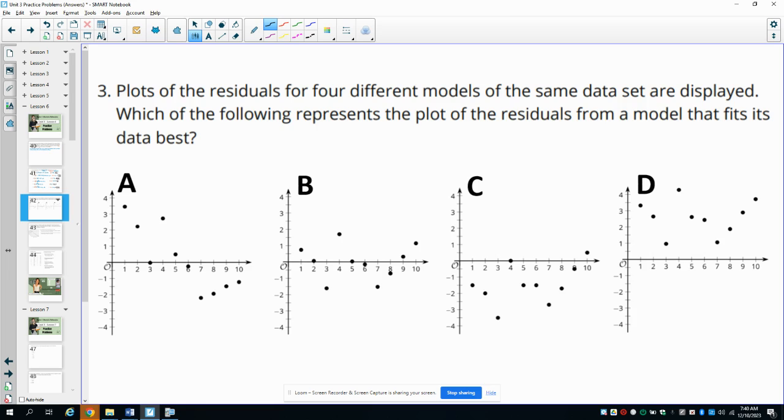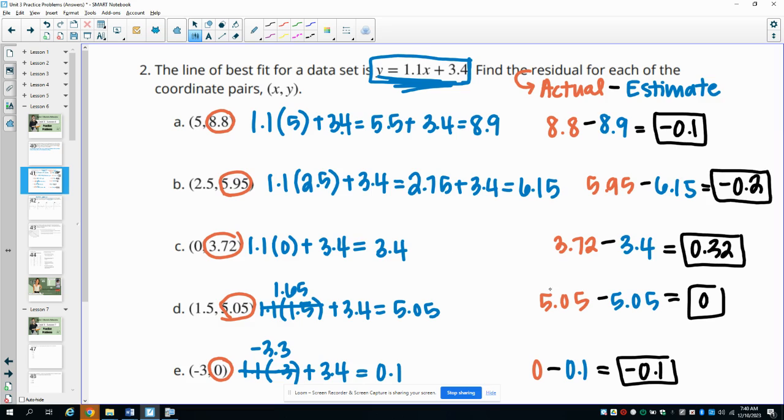Number three, the plots of the residuals of four different models of the same data are displayed. Which of the following represents the plot of the residuals from a model that fits the data best? Now remember, residuals, when they match the data, the residual is 0. And we saw that here where we had the actual and the estimate were equal, so the residual was 0.